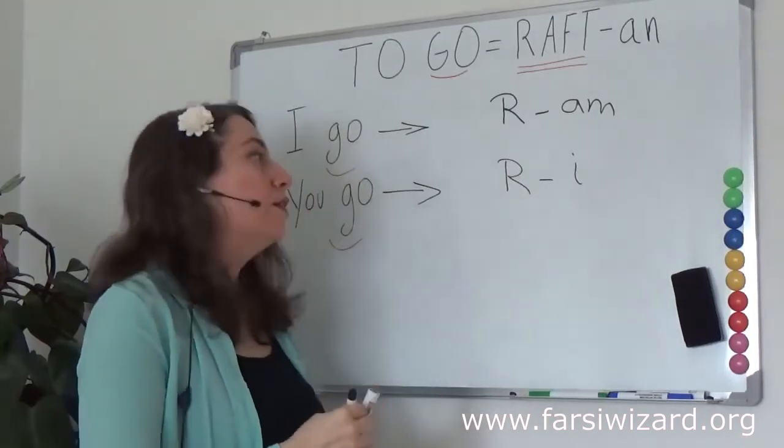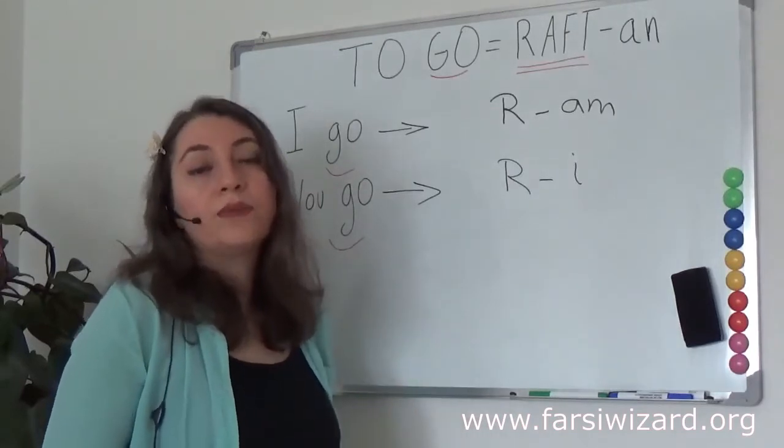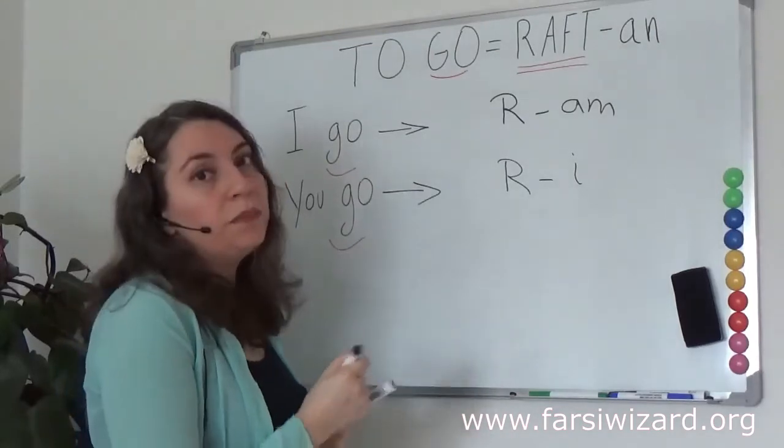And for you go, the ending you informal will be 'e.' So far so good. Now here's the trick. Remember all present tense verbs in Farsi have a handle, a prefix, and that prefix is 'me.'